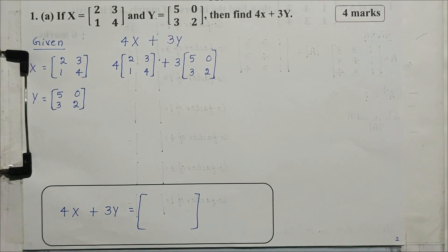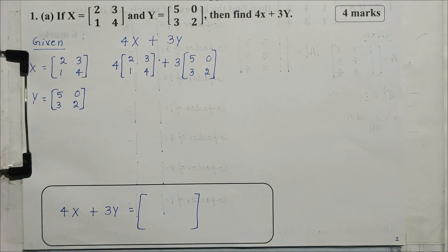Question number 1a: If x is equal to [2, 3, 1, 4] and y is equal to [5, 0, 3, 2], then find 4x plus 3y. This is a 4-mark question.